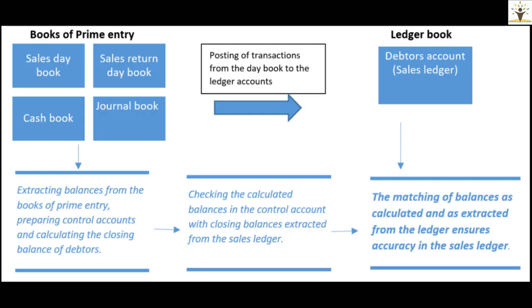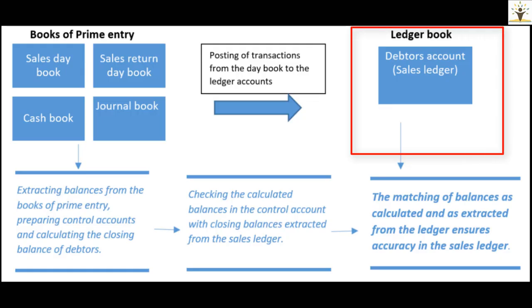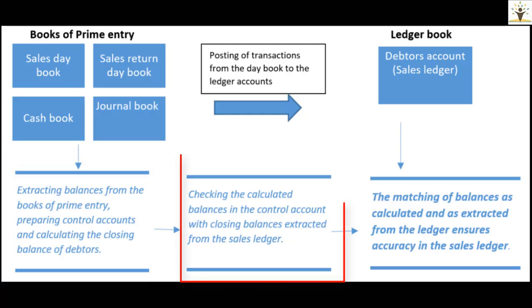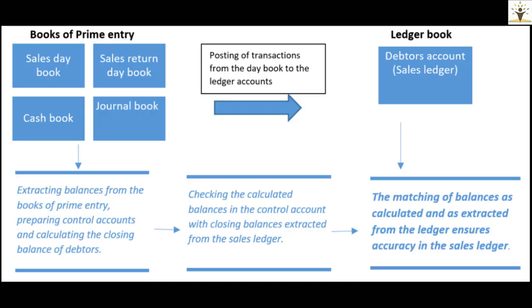So the entire process of preparing control accounts can be summed up using the following diagram. Transactions are first recorded in the books of prime entries, then posted to ledger accounts, and finally the accounts are balanced. We then prepare a sales ledger control account — which is a total debtors account — by extracting information from the daybooks, then find the closing balance. If the balance as per the sales ledger control account matches with the total of all account balances in the sales ledger, it can be concluded that the sales ledger is free from errors.